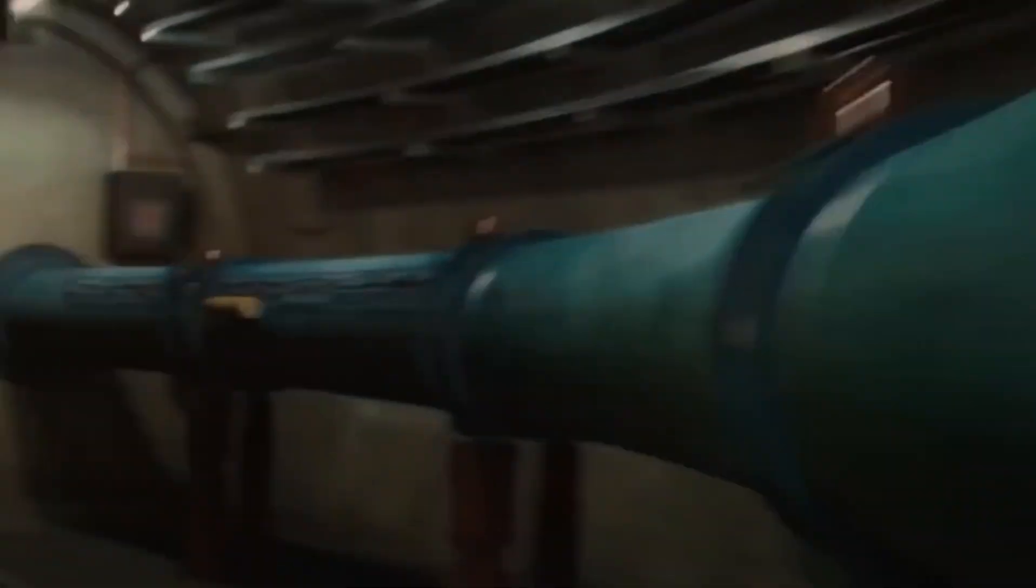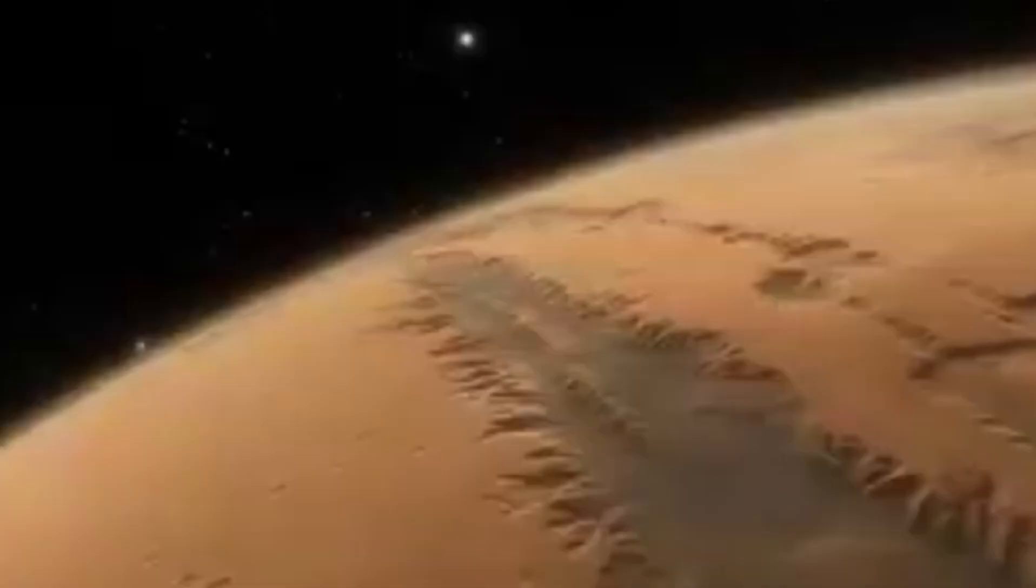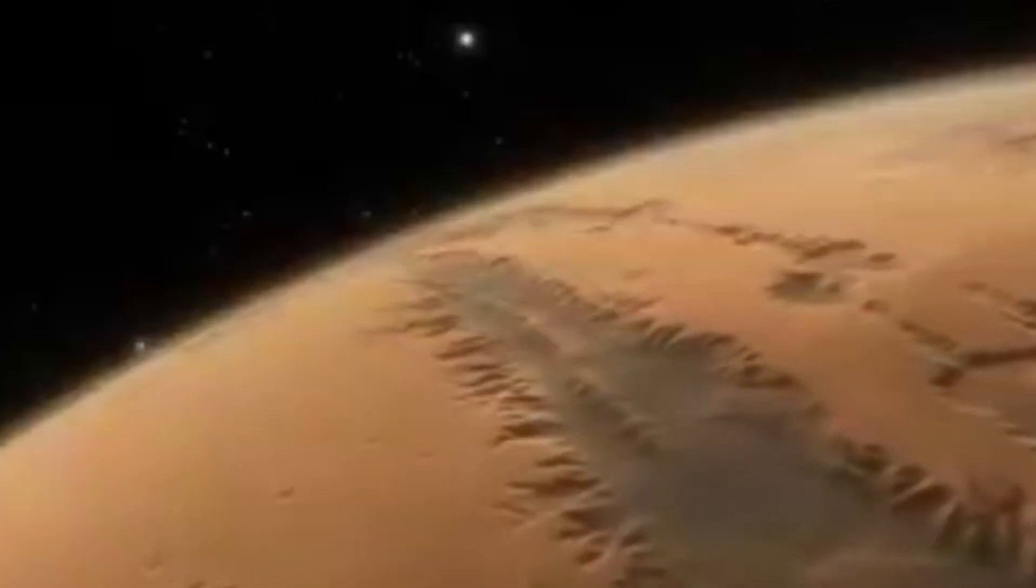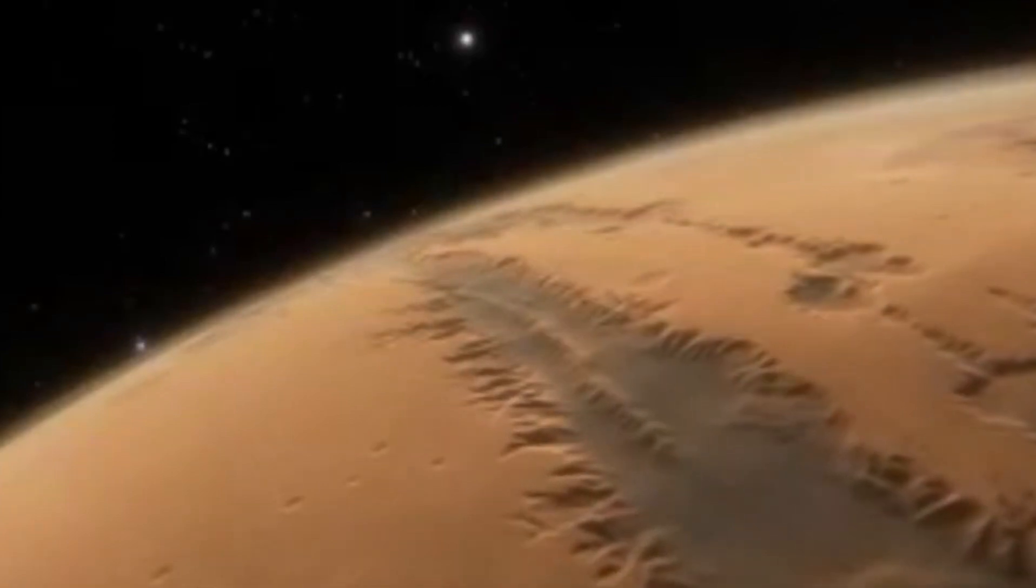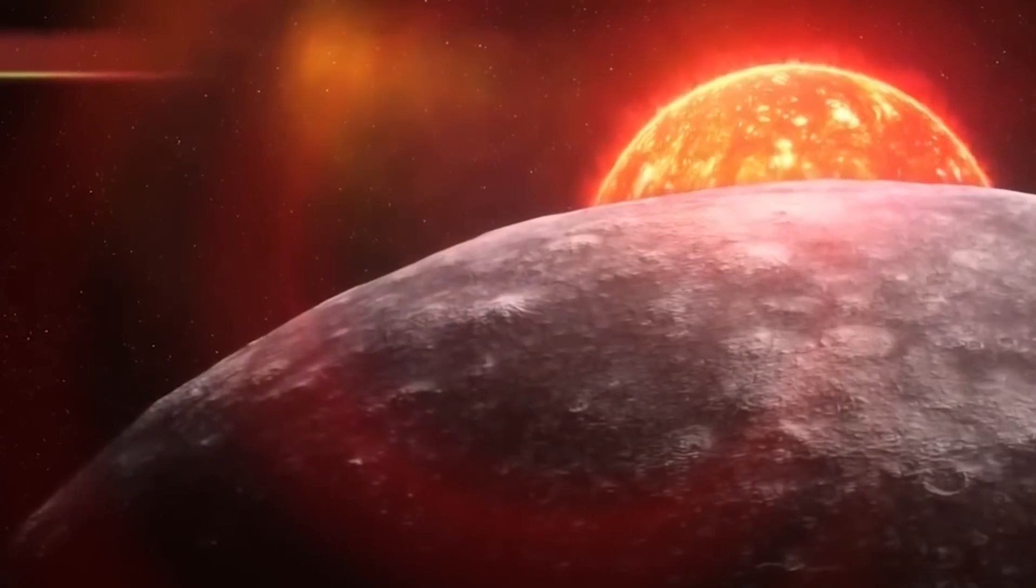Other moons of Neptune, such as Proteus, Larissa, and Nereid, are less well-known but still contribute to our understanding of the planet and its environment. The irregular orbits and unique characteristics of these moons offer scientists valuable clues about the history of Neptune's gravitational interactions and its complex system.